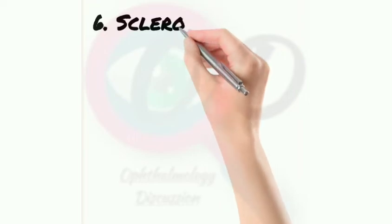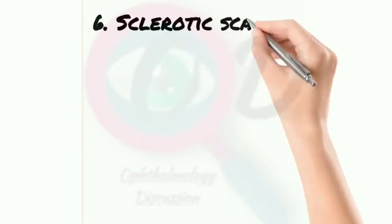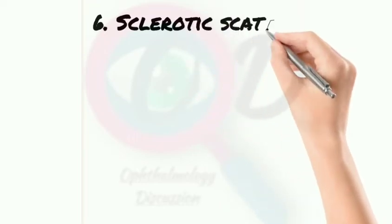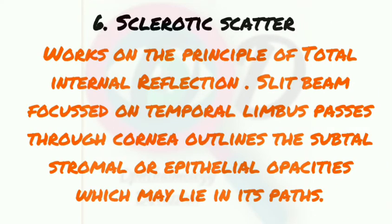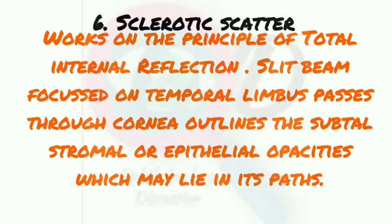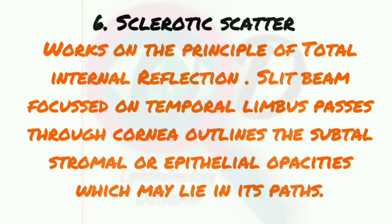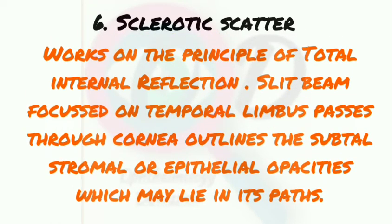The sixth type is sclerotic scatter. Sclerotic scatter works on the principle of total internal reflection. The slit lamp is focused on the temporal limbus, and the light passes through the cornea to outline subtle stromal or epithelial opacities that may lie in its path.